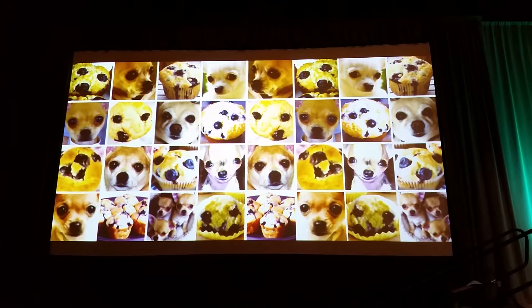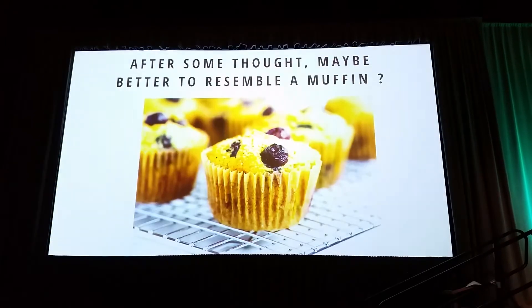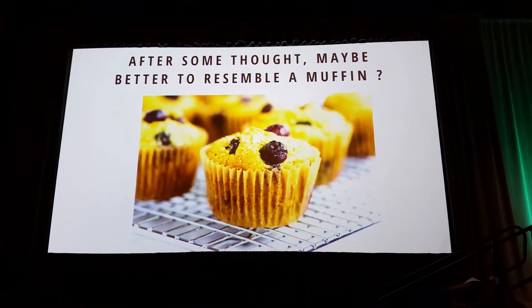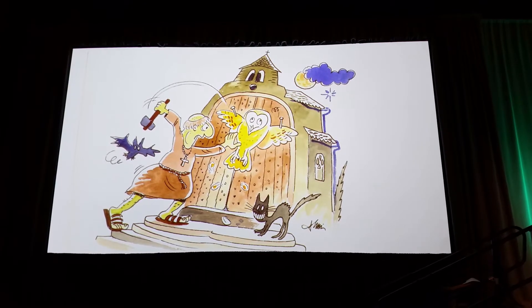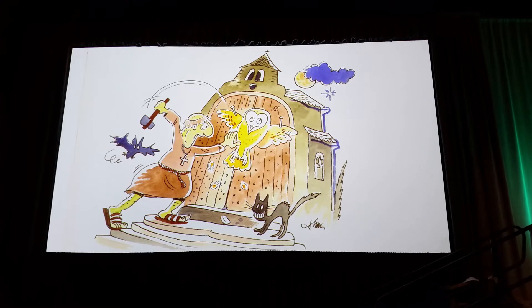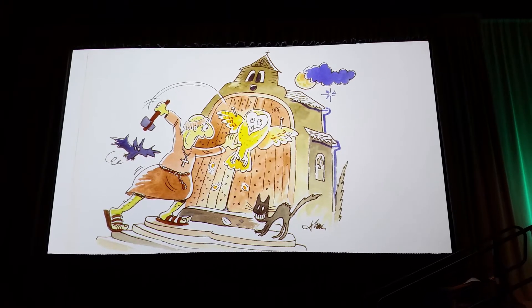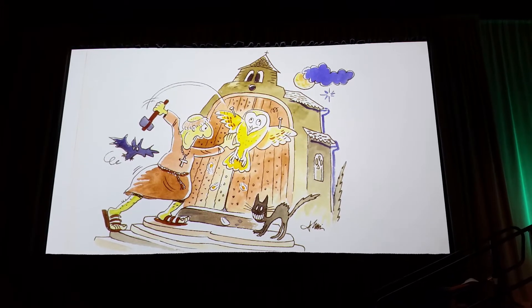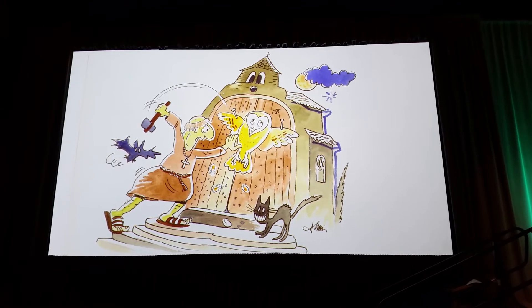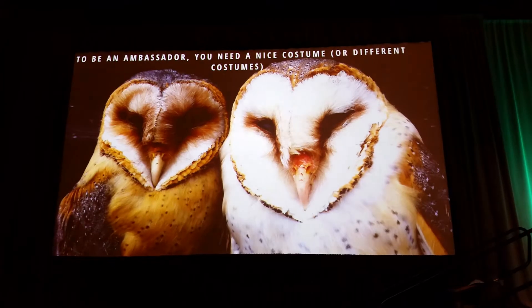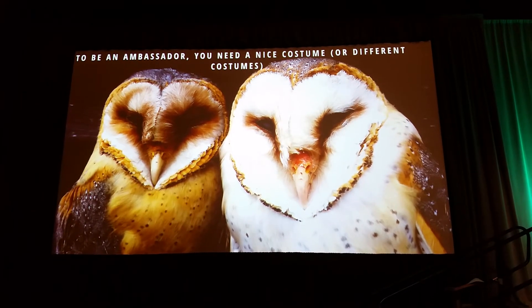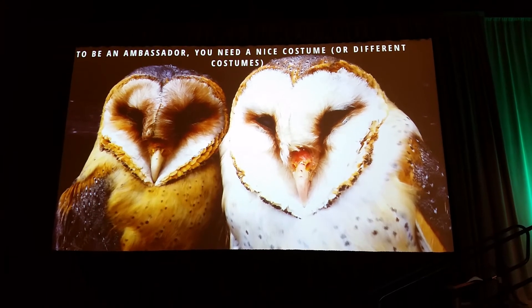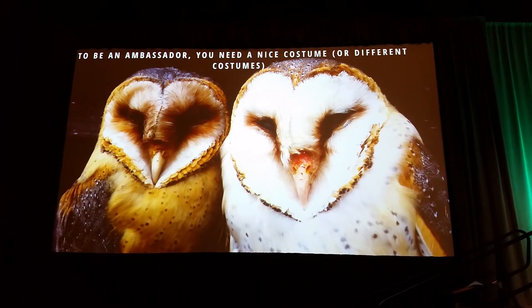Maybe it's better to look like a muffin, because in the past we were killing the barn owls. In the Middle East, we believe that this is bad luck. We were doing the same in New York — we were nailing the barn owls against the doors of churches to ward off evil spirits. And to be an ambassador, you need to have a very nice costume — sometimes several costumes, between day and night. The barn owl is the same: you can have white barn owls, dark barn owls. A real ambassador.